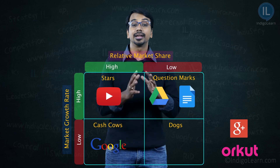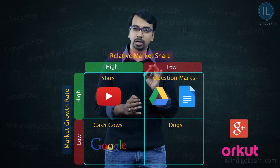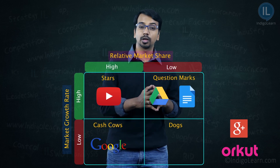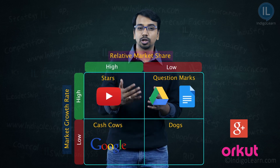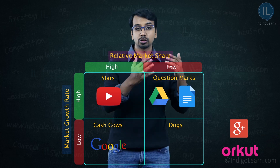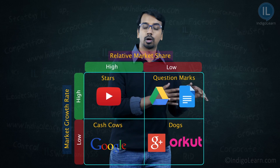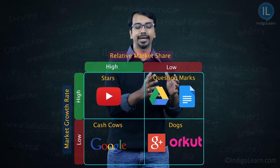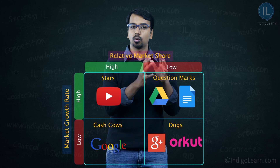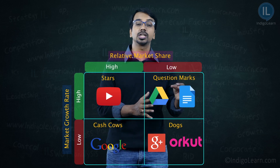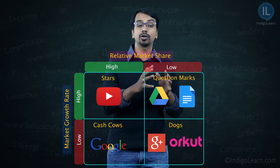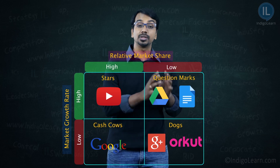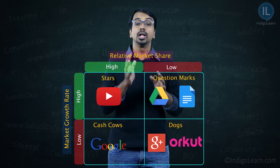Some products of Google like Google Groups, which is not much of relevance today, or Google's social media platform, went from question mark to dog and were eventually divested. Once a product moves into the dog category, the only choice available to most businesses is to divest it — sell it off, collect whatever amount you can, and put it into other businesses rather than continuing a product that is in the dog category.